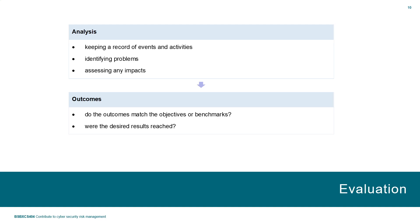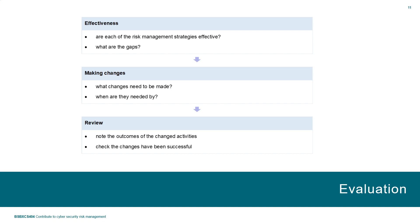The steps in evaluation start with analysis — we need to keep records of all events and activities that occur, identify problems, and evaluate the impacts of those issues. We then assess outcomes: did the outcomes of the process match the objectives? Did we reach our desired results? This is where benchmarking comes into play. Next is effectiveness — because we've got this measuring stick, we can gauge the effectiveness of the strategies and identify any gaps.